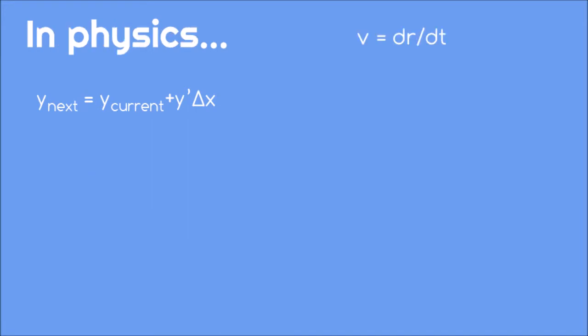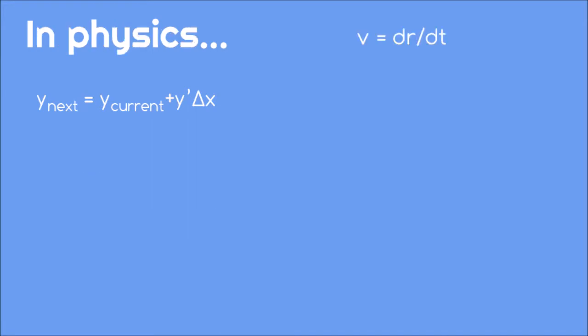If you're in a physics class, you'll learn that velocity is the derivative of position, which means that we can apply the Euler-Cromer method to velocity and position if we make a few changes.